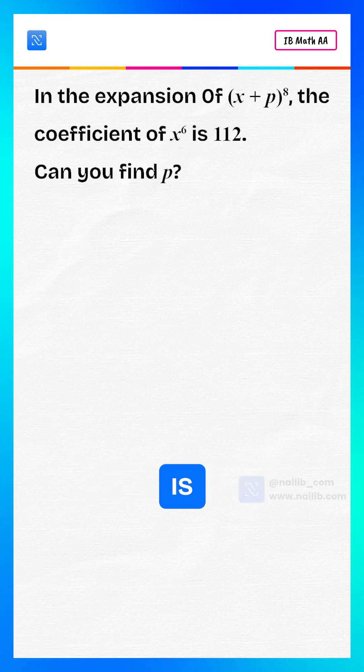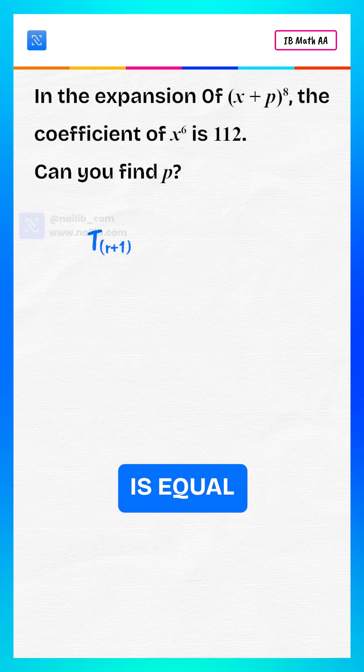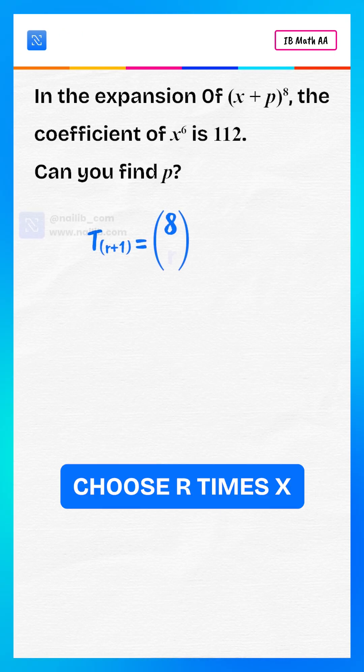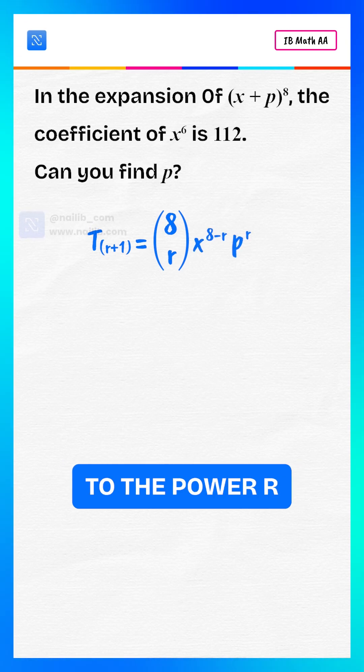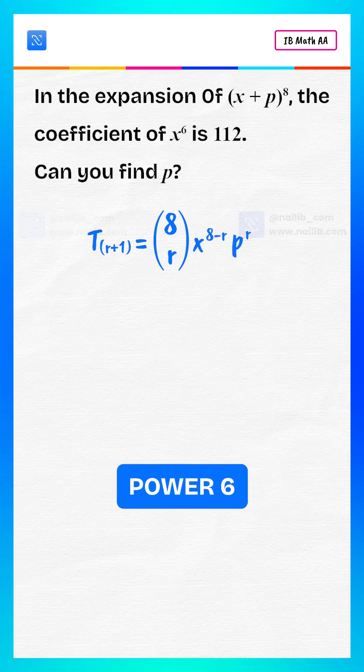The general term in the expansion is T sub r plus 1 equals 8 choose r times x to the power of 8 minus r times p to the power r. To get x to the power 6,